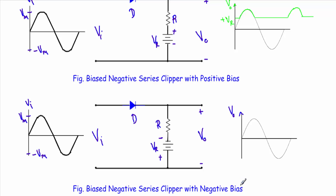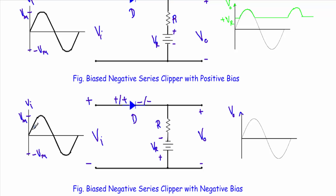Now I will talk about the biased negative series clipper with negative bias. In the negative series clipper circuit, we are applying a reference voltage of minus Vr — the positive electrode of the applied voltage is in the downward direction and the negative electrode is in the upward direction. Since there is a voltage source, I first have to define the transition voltage — the region in which the diode will be in forward bias and in which it will be in reverse bias. During the positive half cycle, this terminal will be positive and this terminal will be negative, so the positive terminal is connected with the P side and the negative terminal with the N side of the diode. For this reference voltage, the negative terminal is connected with the N side and the positive terminal with the P side — meaning for the positive half cycle the diode will be in forward bias, so our transition voltage will lie in the negative half cycle.